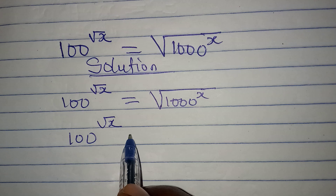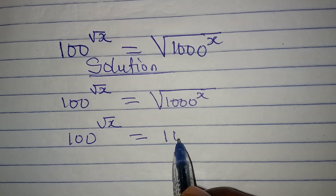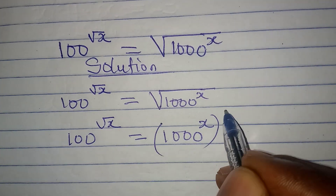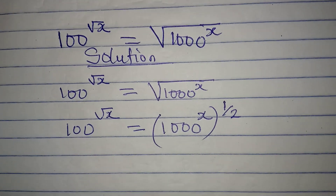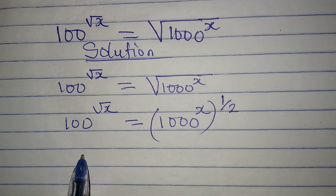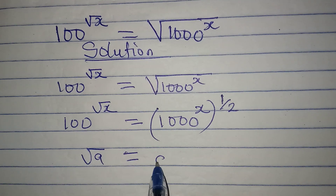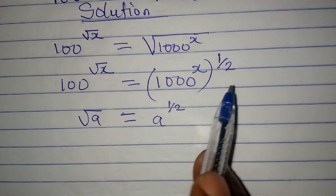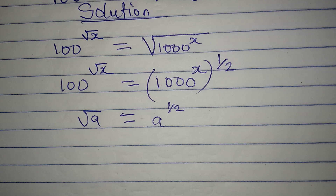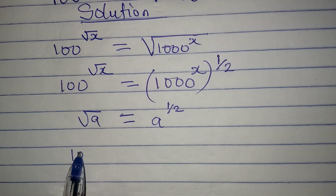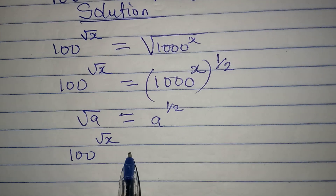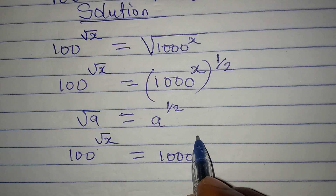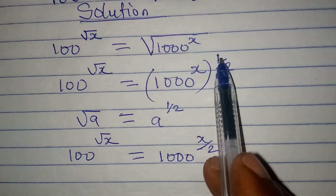This is 100 to the power of root X equal to 1000 to the power of X, and then the whole of this is raised to the power of 1 over 2. This is because square root of a is the same as a to the power of 1 over 2. Then if you have two powers like this you can always multiply them, so we have 100 to the power of root X equal to 1000 to the power of X over 2.